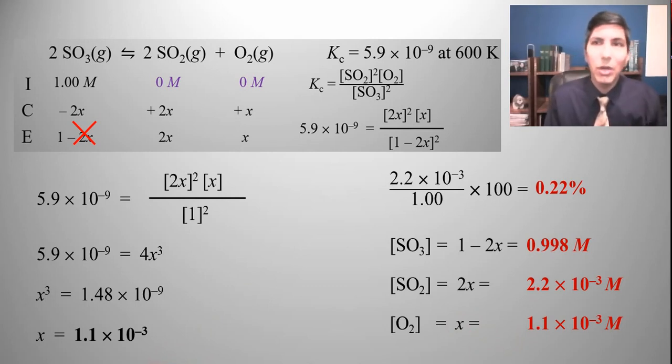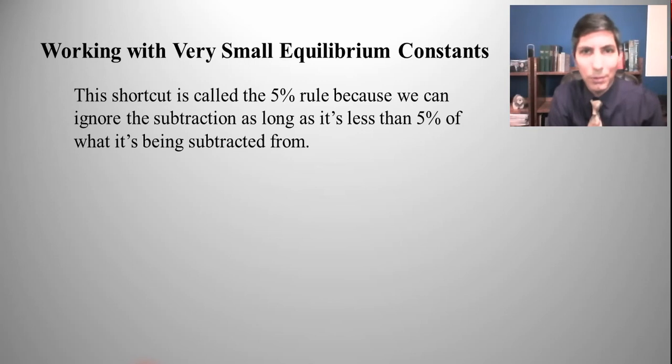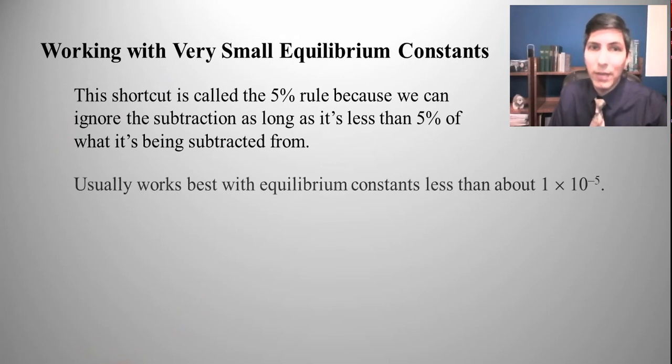So this is something that you can do when the equilibrium constant is very small. Now when I say very small, we call this the five percent rule very often in general chemistry and AP chemistry. We call it that because we can ignore that subtraction as long as it's less than five percent of what it's being subtracted from. In this case it was 0.22 percent, so very very small. If it had been like 5.1 percent or a little bit more than five percent well we probably wouldn't have been able to do that. This ignoring works best when you have an equilibrium constant that's less than about 10 to the minus fifth.